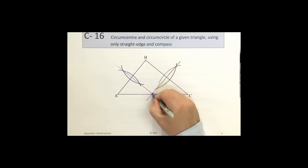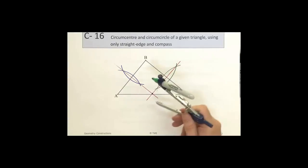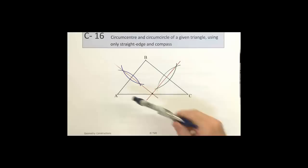And we show the point there. So that point should be equidistant from each of A, B, and C.